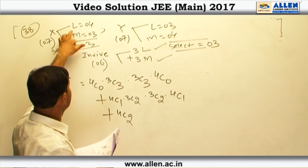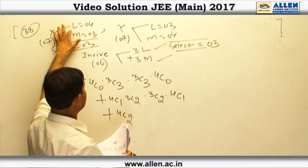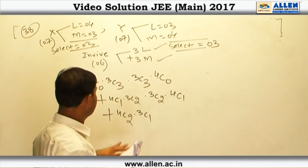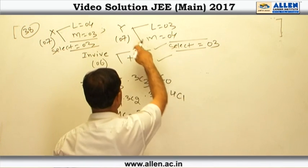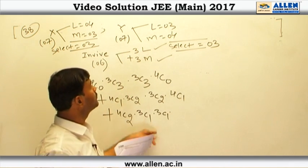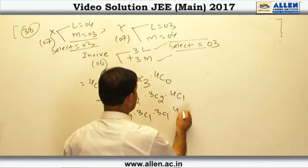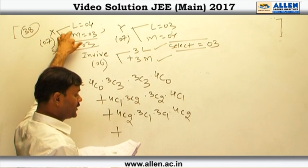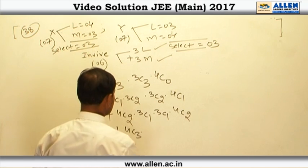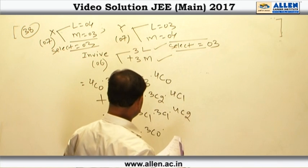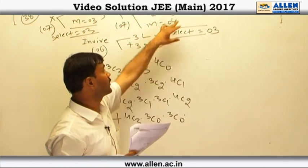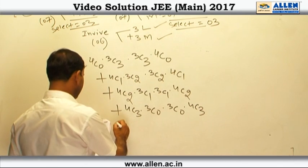Possibility 3: select 2 ladies from X's 4 (4C2 ways) and 1 man from X's 3 (3C1 ways). We need 1 more lady from Y's 3 (3C1 ways) and 2 more men from Y's 4 (4C2 ways). Possibility 4: select all 3 ladies from X's friends (4C3 ways), no men from X, and all 3 men from Y's 4 men (4C3 ways), no ladies from Y. On solving all cases we get 485. Therefore answer 2 is correct.